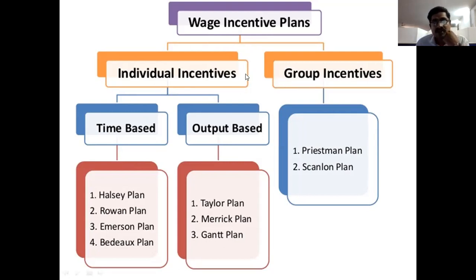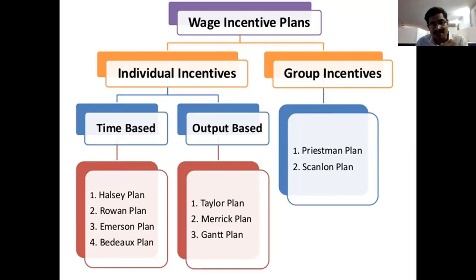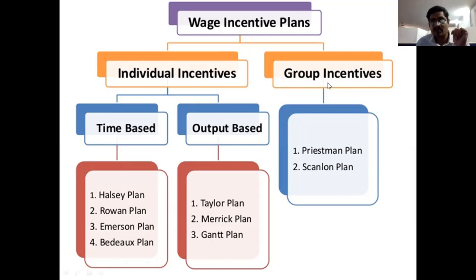In wage incentives, we have two types: individual incentives and group incentives. Individual incentives are provided to each and every worker based upon their performance — each individual gets extra payment from the company for their performance. Group incentives means extra payment paid to a group of people or teams; each team gets extra incentives based upon their team performance.